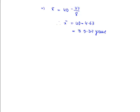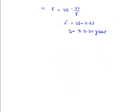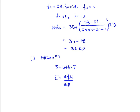They have asked for the mean of the given data. Here, mode is 36.8 and mean is 35.37 years.